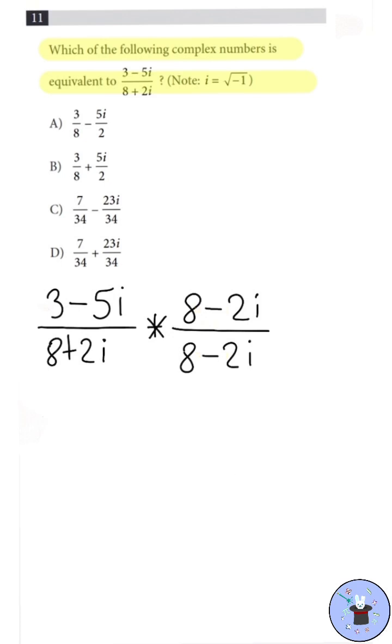Now, we just need to solve and simplify from here. We can FOIL it out and factor to get 24 minus 6i minus 40i plus 10i squared in the numerator.